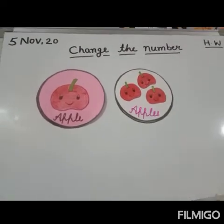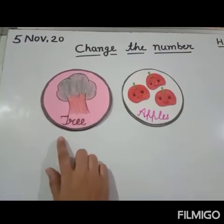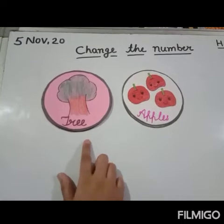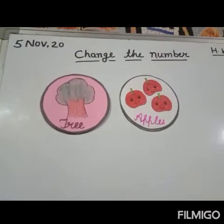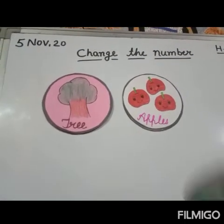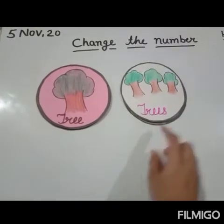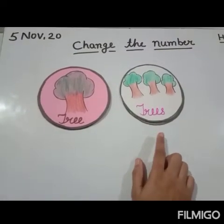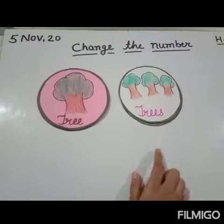Next is tree — T-R-E-E. Tree means पेड़ (tree), and when there are many trees, what will they become? Trees — T-R-E-E-S. What will they become? Trees.